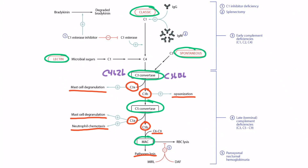The membrane attack complex can also form on RBCs and cause red blood cell lysis. Thankfully, our body prevents this through two surface proteins: membrane inhibitor of reactive lysis, or MERL, and decay accelerating factor, or DAF. As illustrated here, these proteins will combat the membrane attack complex on the red blood cell membrane and prevent red blood cell lysis.